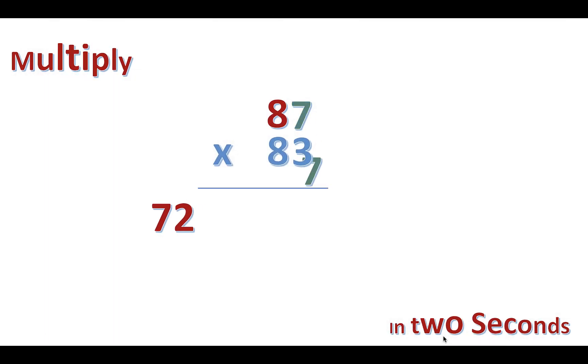Then we multiply 7 by 3, which is 21. We combine the numbers to get 7,221. Whoa, that's genius!